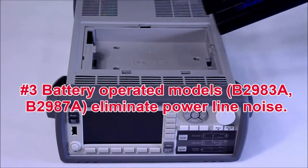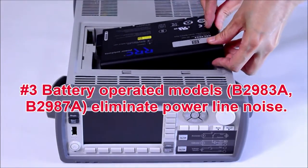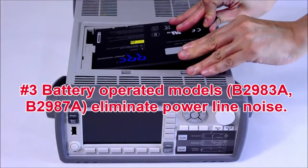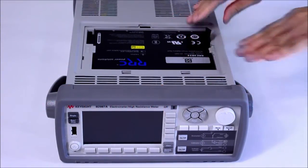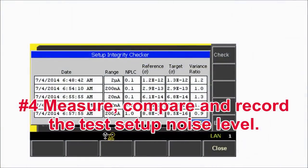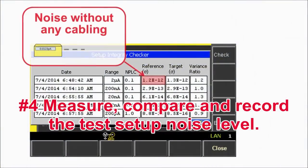Battery operated versions are available for both the femto-picoammeter and electrometer. These models can eliminate 100% of the AC power line noise. The available Setup Integrity Checker software measures,